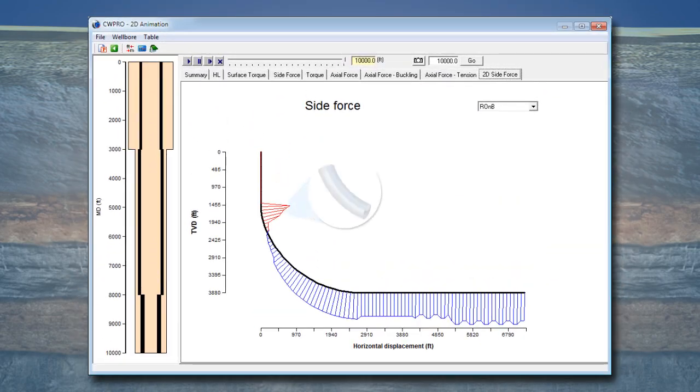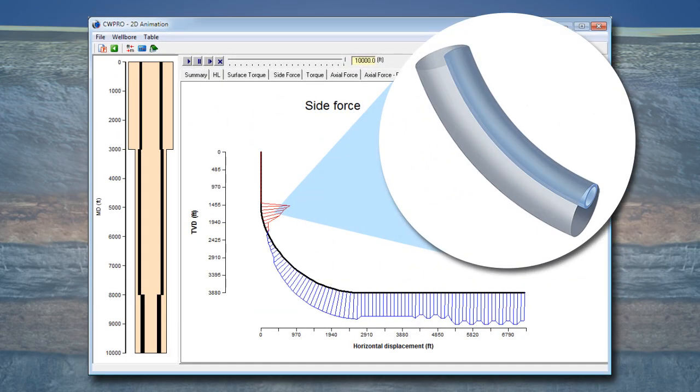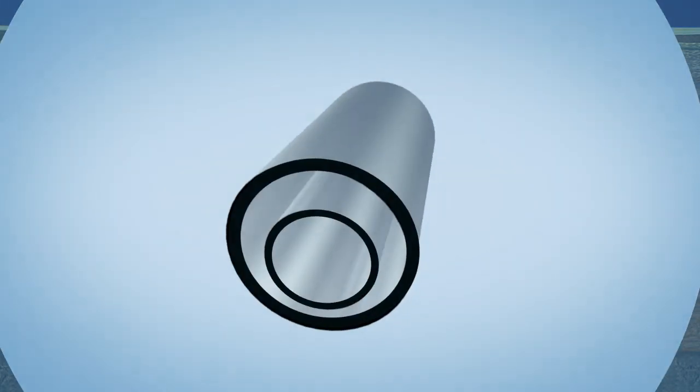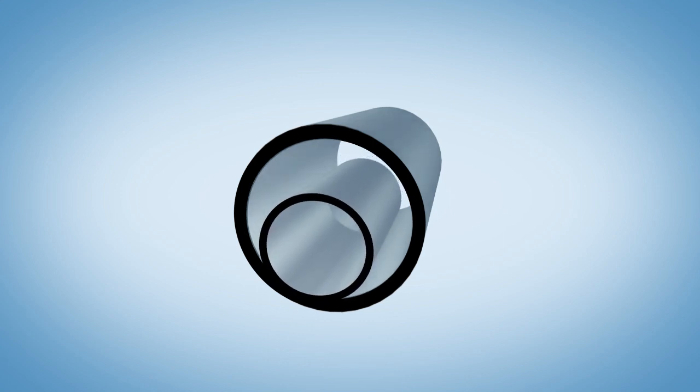In a deviated well, the drill pipe weight and dogleg determine the direction and magnitude of side forces. Under this side force, the rotating tool joint against the inner wall of the casing gradually removes steel from the wall, forming a crescent-shaped wear.